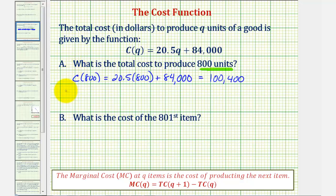Which means the total cost to produce 800 units is $100,400.